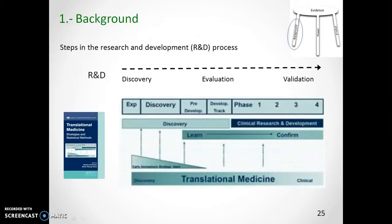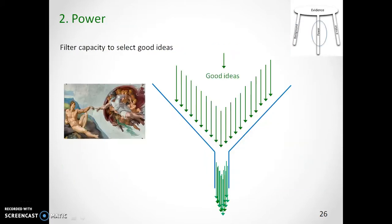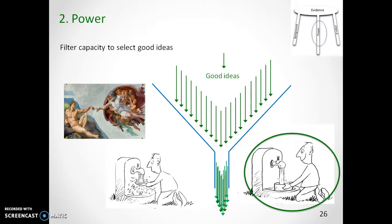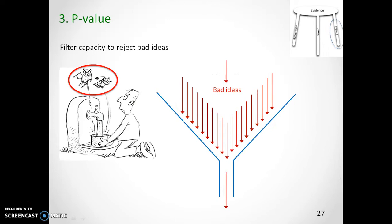We already know that the previous background of a hypothesis is important. As we pass filters from research to development, the basis consolidates. We also know that we need a good design with enough power to collect good ideas provided by nature. And when facing the threat of bad ideas, you need a good filter.